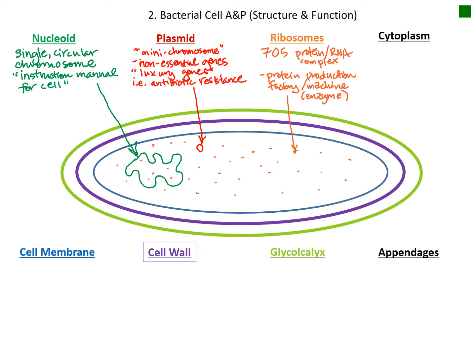The cytoplasm is really an aqueous gel-like solution that promotes chemical reactions throughout the cell. It is composed mostly of water, but there are also proteins and ions or salts in there as well.